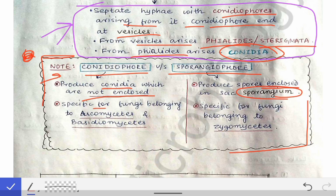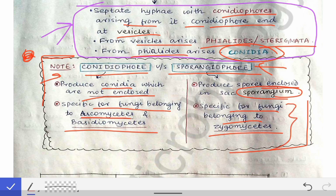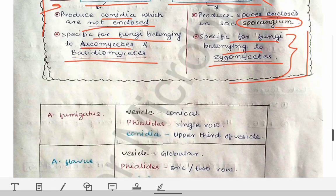Conidiophores are specific to fungi belonging to Ascomycetes and Basidiomycetes, while sporangiophores are specific to fungi belonging to Zygomycetes. In zygomycosis, those fungi have sporangiophores, sporangia, and sporangiospores — these structures are characteristic of Zygomycota only.